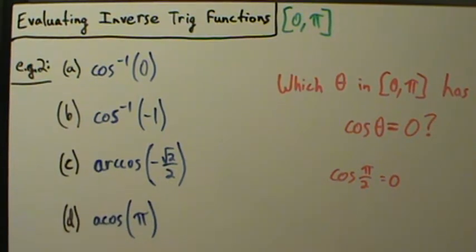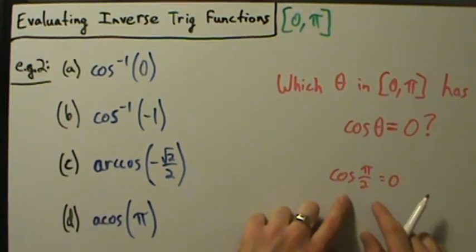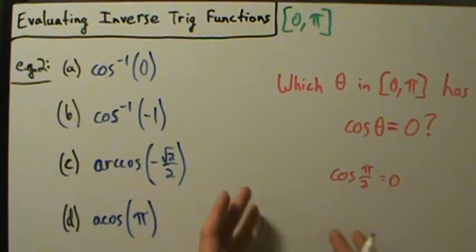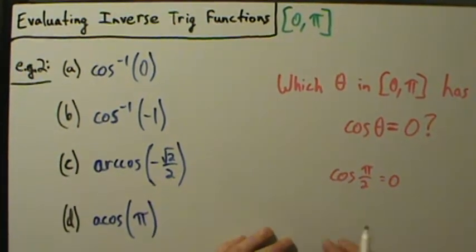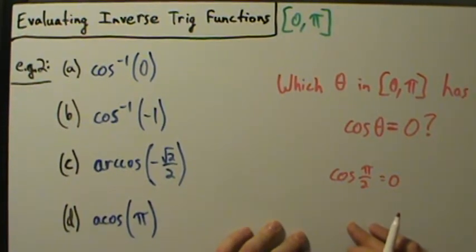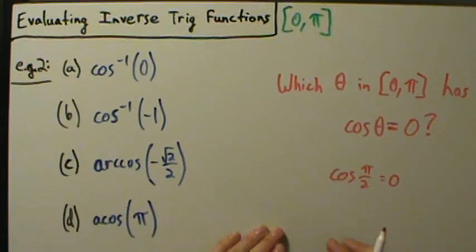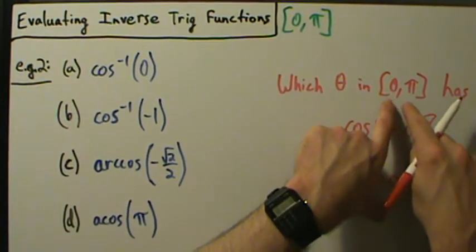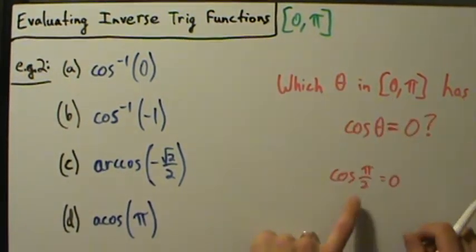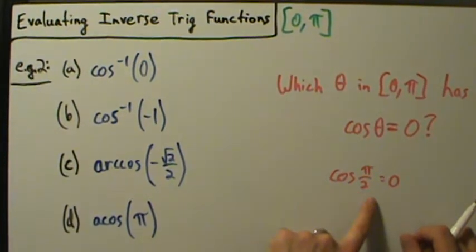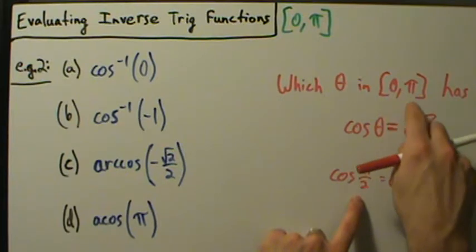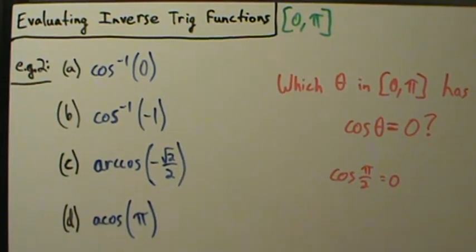There are infinitely many values whose cosine is 0: negative pi over 2, 3 pi over 2, 5 pi over 2, 7 pi over 2, negative 3 pi over 2, and so on. But the only value whose cosine is 0 and that is also in the interval 0 to pi is pi over 2. So pi over 2 is our answer.